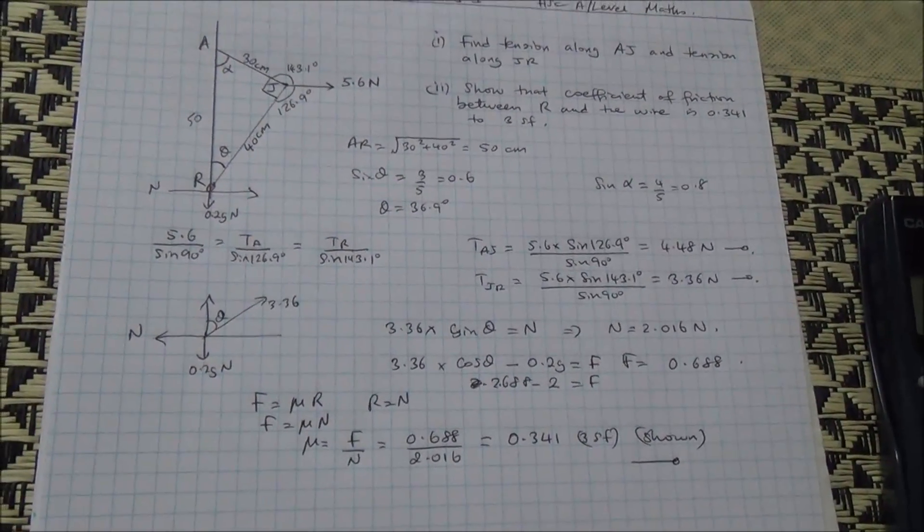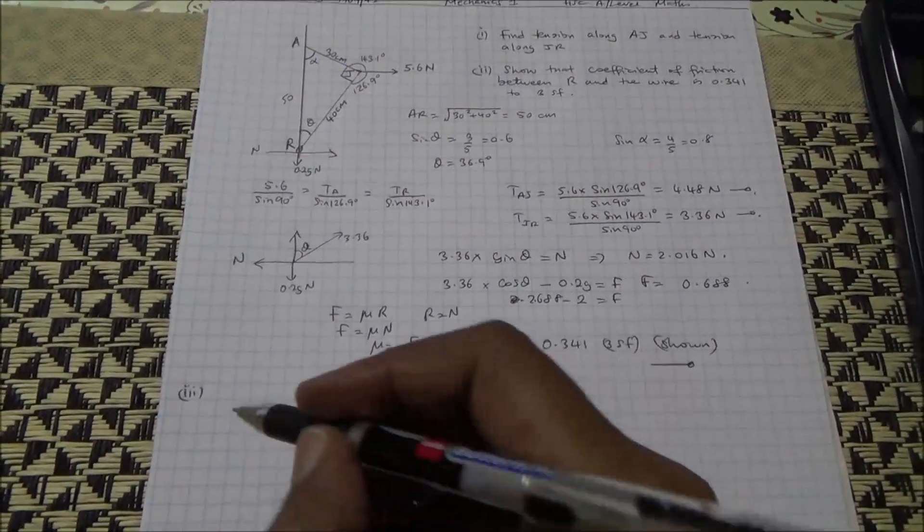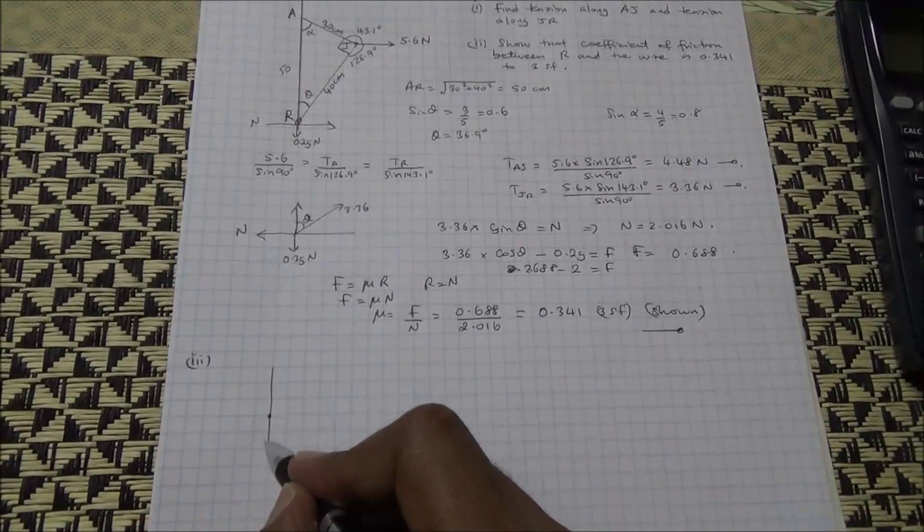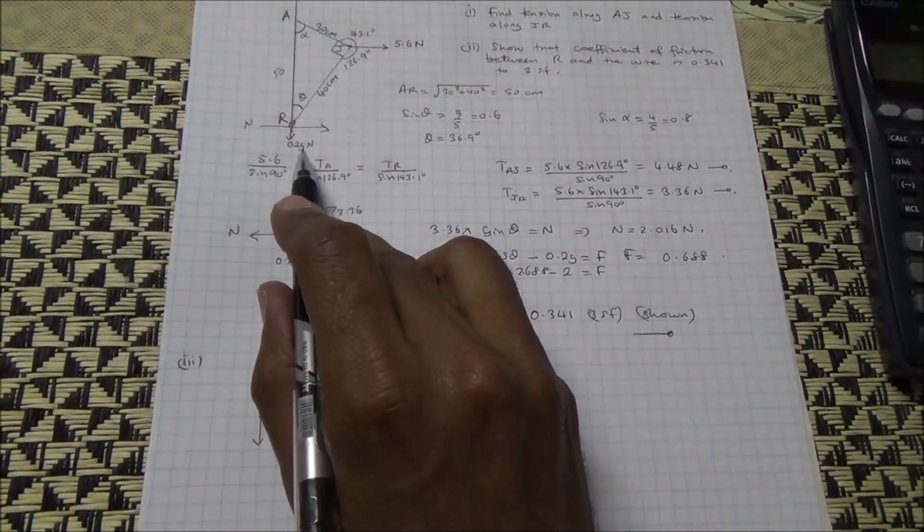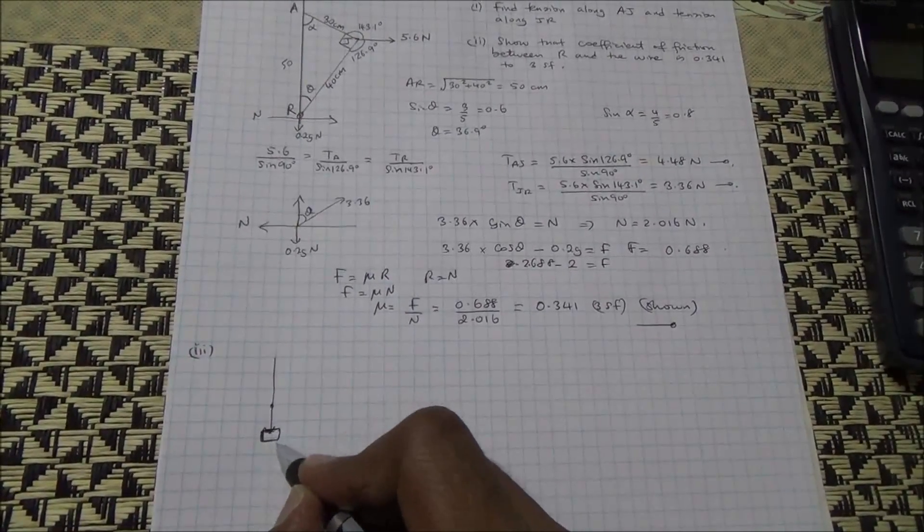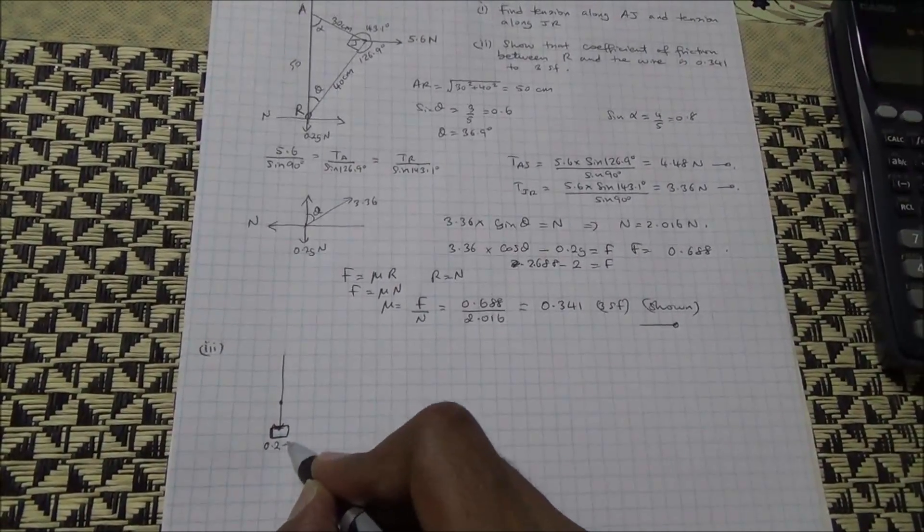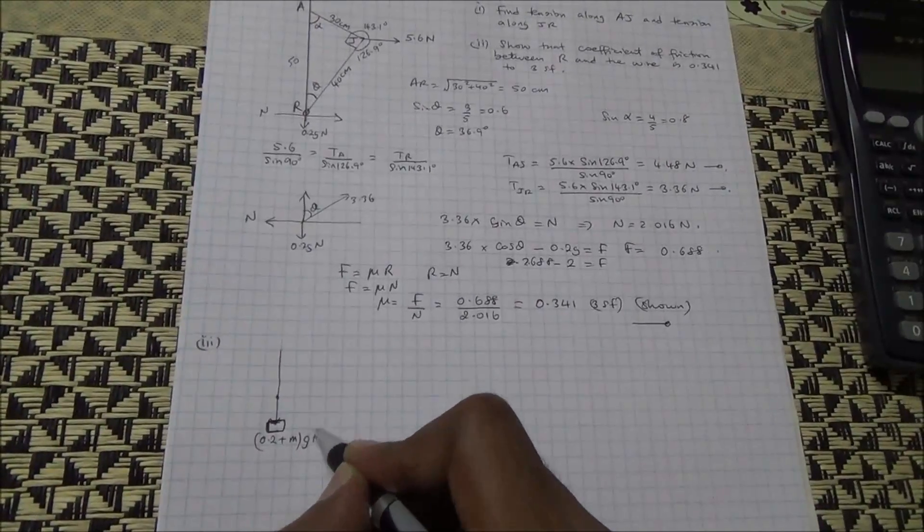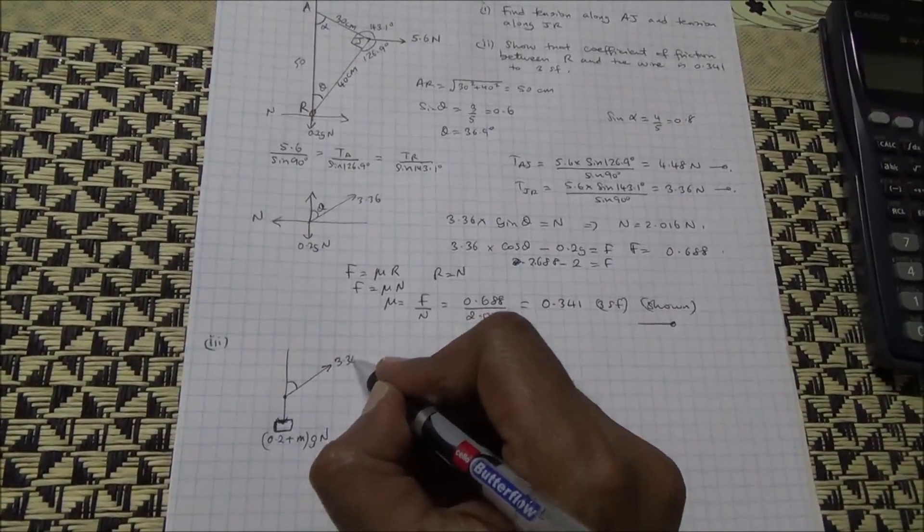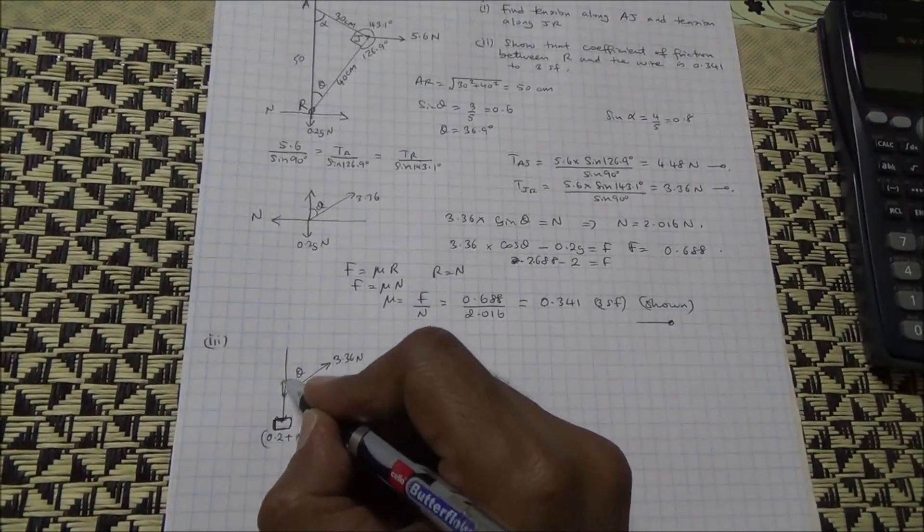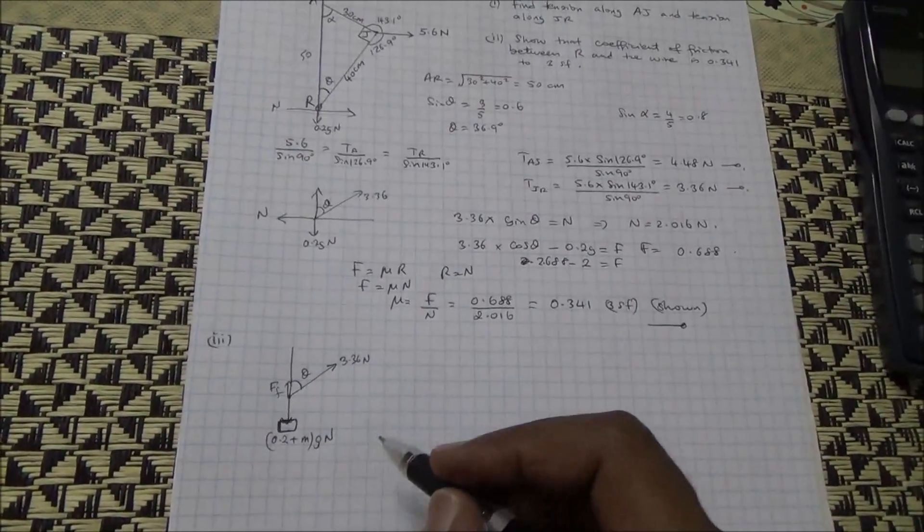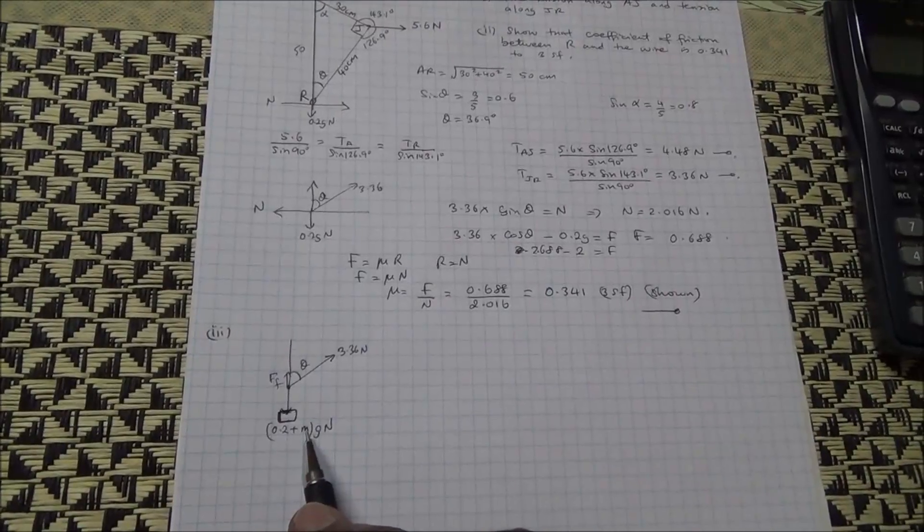Now for the third part of this question, we are told that an object of m kilograms is attached to R. Suppose this is R. The weight was 0.2g Newtons. Now there's an object here attached to this part of the diagram. And this is of m kilograms. Therefore, the total weight is going to be 0.2 plus mg Newtons. Remember the force is still there, that is 3.36 Newtons. This is theta. And the force of friction, we are told, is the same. It hasn't changed. The coefficient of friction hasn't changed. So what is going to happen? We need to find the m, the weight of m.